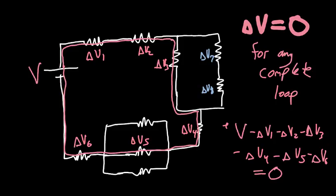We'll keep going back and forth between the loop rule, the junction rule, and Ohm's law. The last thing we need to cover before solving these problems is the idea of equivalent resistance, and that will be in the next video.